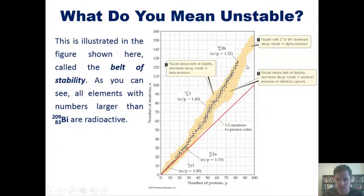This is illustrated in the figure shown here called the belt of stability. As you can see, all elements with numbers larger than bismuth-209, which is way up here, are radioactive. In summary, any dot that's yellow represents an element that's unstable from a nuclear standpoint.